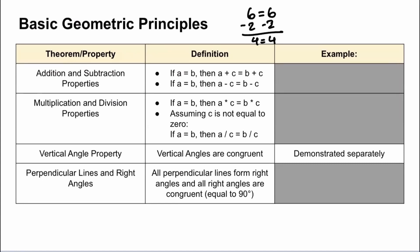Now we have our vertical angle property — vertical angles are congruent. We don't really know what vertical angles are yet, and that's why it's demonstrated separately. And finally, our last property covers perpendicular lines and right angles. A perpendicular line is a vertical line on top of a horizontal line. All perpendicular lines form right angles, and all right angles are congruent or equal to each other since they're all 90 degrees, represented by a little box instead of the typical arc.